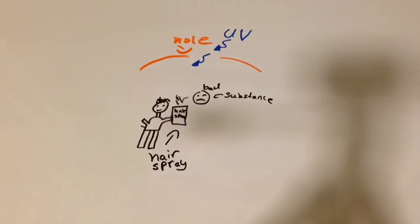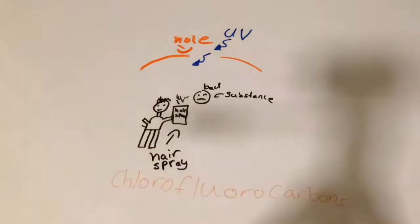Chlorofluorocarbons is a fancy way of saying chlorine and bromine. Chlorofluorocarbons are also often found in aerosols such as hairspray.